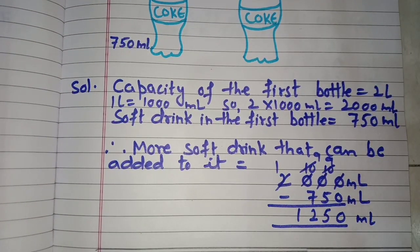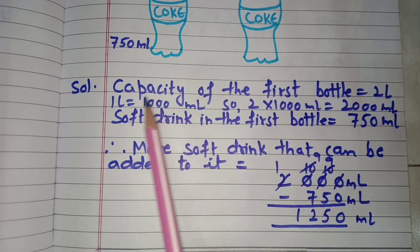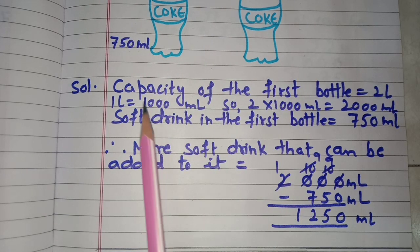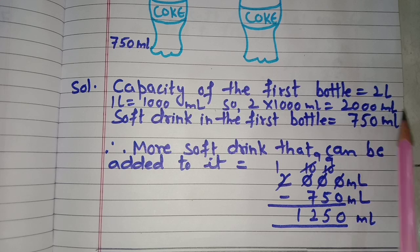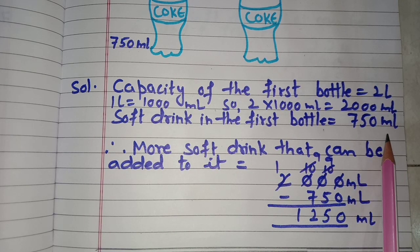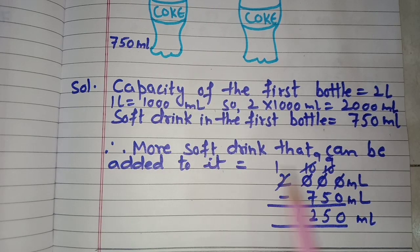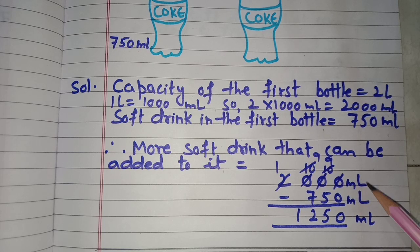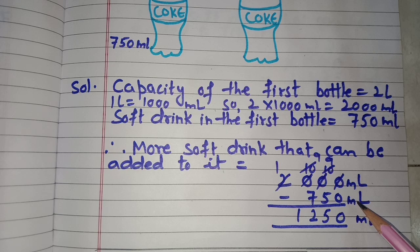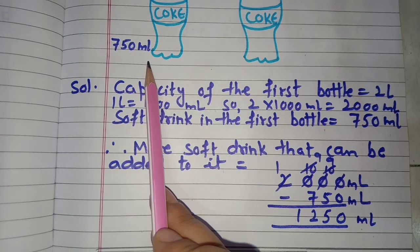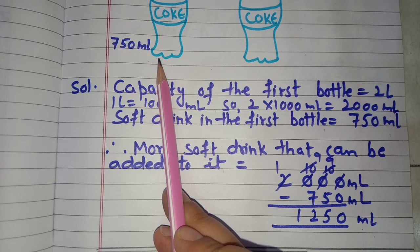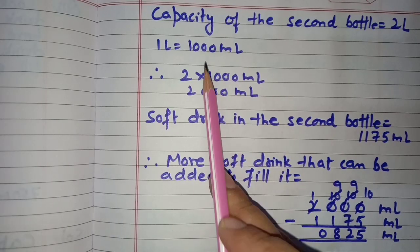For the first bottle, the capacity is 2 litres which equals 2,000 millilitres (since 1 litre equals 1,000 ml). The soft drink in the first bottle is 750 ml. So the more soft drink that can be added is 2,000 minus 750, which equals 1,250 ml. Therefore, 1,250 ml more soft drink can be added to the first bottle to make it 2,000 millilitres.